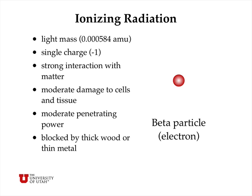The next type of ionizing radiation is called a beta particle, and a beta particle is just an electron. It has a relatively light mass — about one two-thousandth of the mass of a hydrogen atom, or an atomic mass unit. It has a single negative charge, and it has relatively strong interactions with matter, but not as strong as alpha particles.